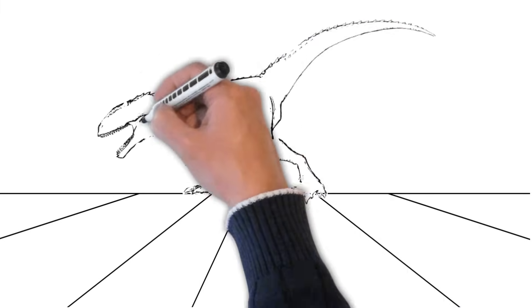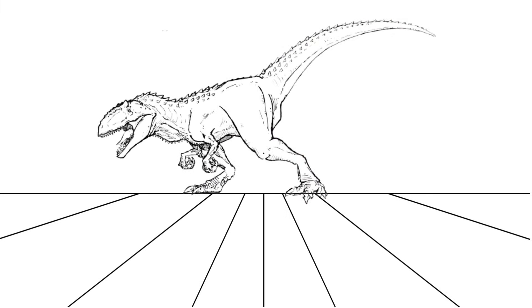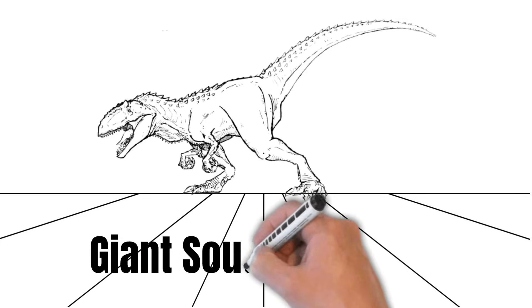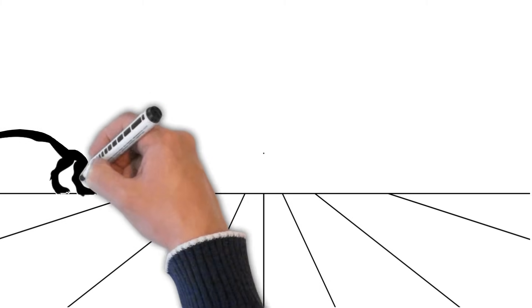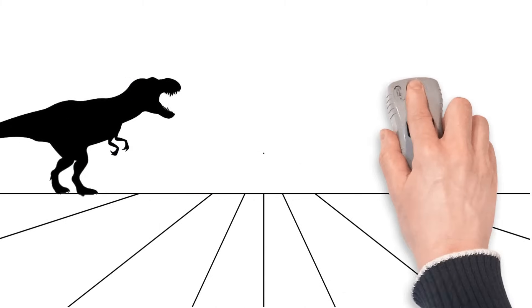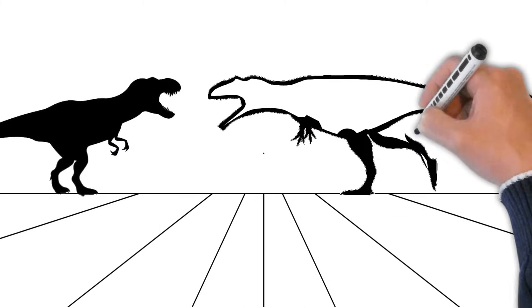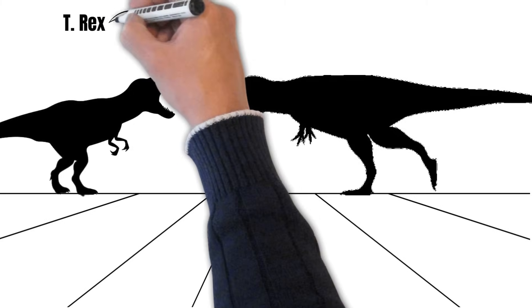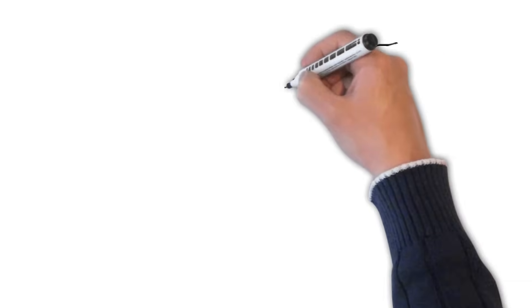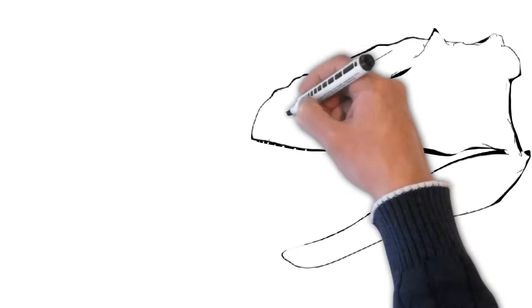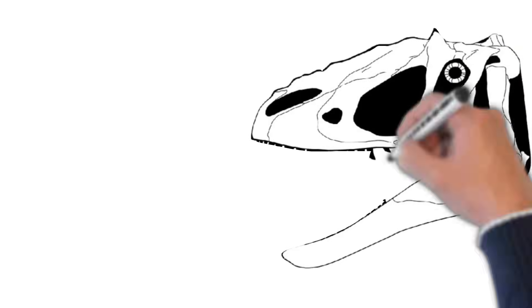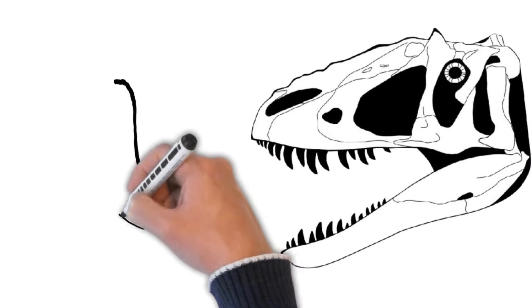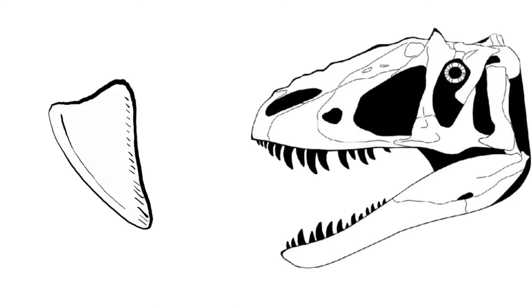Our first stop introduces us to Giganotosaurus, one of the largest meat-eating dinosaurs to ever walk the Earth. Its name means giant southern lizard, and it lived around 98 million years ago during the late Cretaceous period. Giganotosaurus was even bigger than T. rex, growing up to 40 feet long. With its massive jaws and sharp teeth, this fierce predator hunted large herbivores across what is now Argentina. Imagine the ground shaking as Giganotosaurus charges after its prey. What an incredible sight!